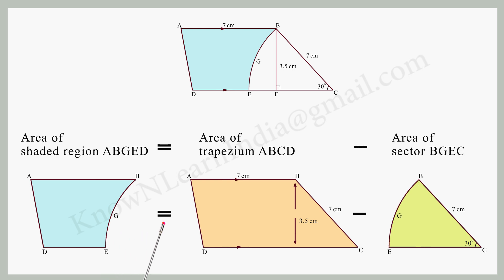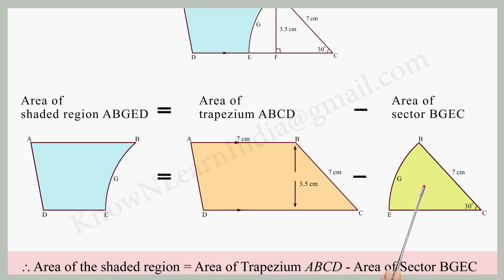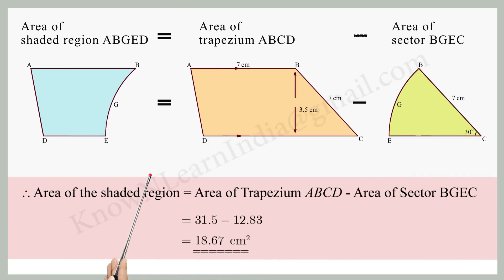Area of shaded region ABGED equals area of trapezium ABCD minus area of sector BGEC. Substituting the values, area of shaded region ABGED equals 31.5 minus 12.83, which equals 18.67 cm squared.